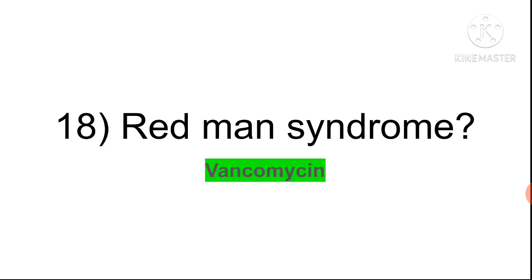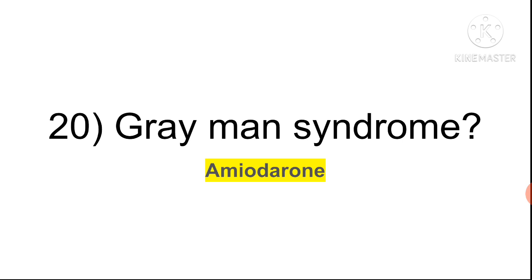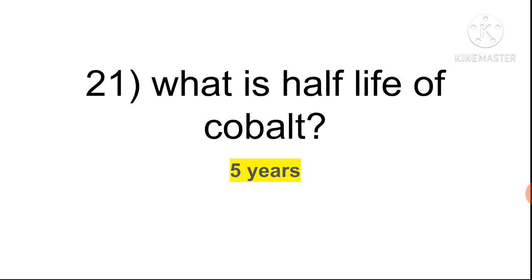Question eighteen: red man syndrome is caused by vancomycin — it is a side effect of vancomycin. Question nineteen: gray baby syndrome is associated with chloramphenicol. Chloramphenicol also causes aplastic anemia. Question twenty: gray man syndrome is associated with amiodarone, an anti-arrhythmic drug. Differentiate gray baby syndrome (chloramphenicol) from gray man syndrome (amiodarone).